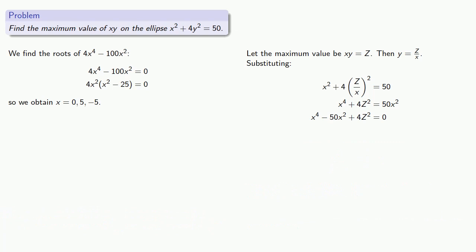If x equals 5, then we find that y is equal to 5 halves. So z is 25 halves,